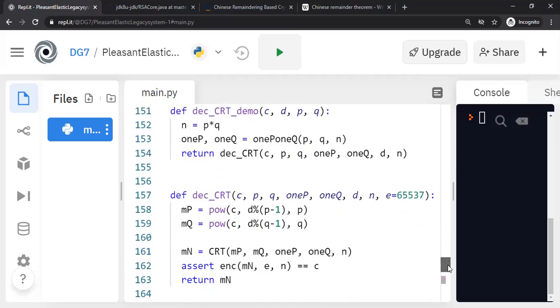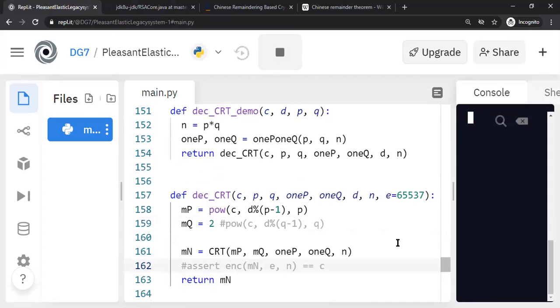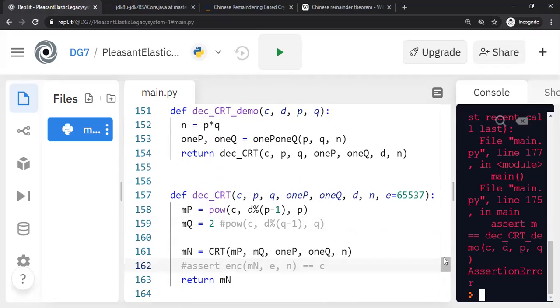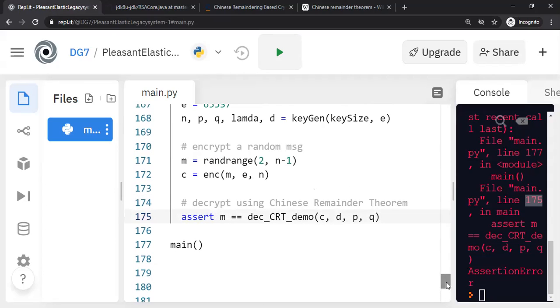Let's introduce some bug in the Chinese Remainder Theorem calculation and show to you that the attacker will not get the m correctly first. So let's go to the message and let's corrupt this. Let's make this as number one. Or if you don't like number one, make it to number two, it doesn't matter. I have to first uncomment this because I'm checking the assertion. As you can see, the decryption failed line number 175, the decryption failed.